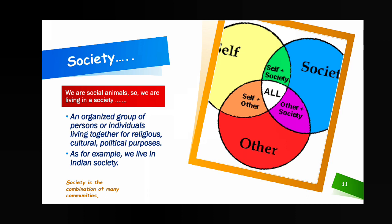Now, today's first topic is society. Society means it is a group — a group of people, a group of individuals, a group of persons. The question is: why are they forming a group? Because we need support, we need help, and we are interdependent on each other. You will help someone and someone will also help you — that is called interdependence.